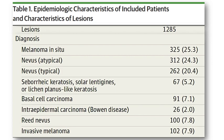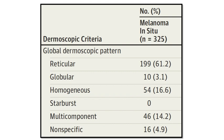Let's see now what we found to typify melanoma in situ. First of all, concerning the global pattern, we have an interesting finding: the multicomponent global pattern, which is of course known to characterize melanoma, here in the group of melanoma in situ was not so frequent. This is reasonable because these early melanomas are not yet so asymmetric. So the majority of melanomas in situ did not display a multicomponent pattern, but a reticular one.